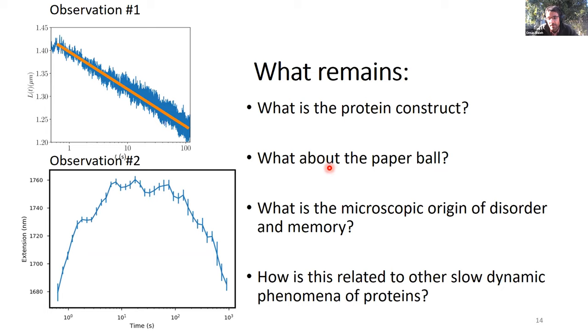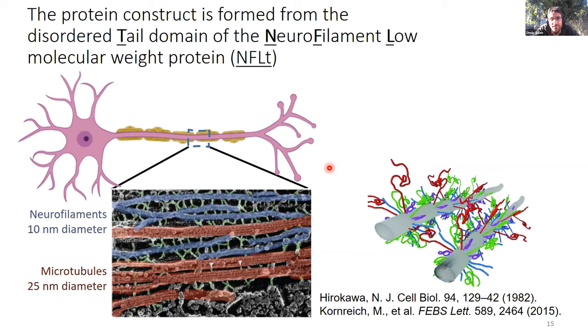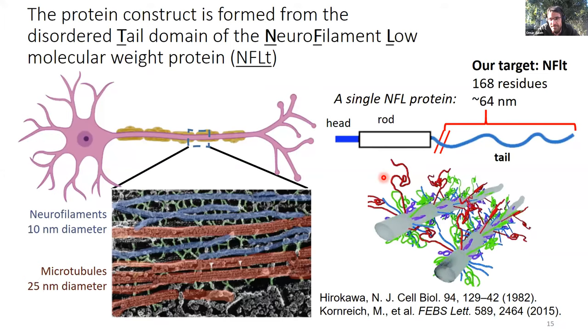So briefly, let's talk about the protein construct. The protein construct is formed from the tail domain of so-called neurofilament low molecular weight proteins. So neurofilaments are a kind of intermediate filament that forms the cytoskeleton and axons, particularly the blue things here, where the red ones are microtubules. The meshwork of this neurofilament, the size of the meshwork of the neurofilament network is set actually by these disordered spacers between rigid rod domains. And those disordered spacers are indeed our target. So a single protein contains a rod-like domain that self-assembles into the stiff filament, but then these brush-like projection domains. And the focus for us today is the tail domain of this NFL protein, and I'll call it NFLT. So we in fact cut it off and measure the 168 residue chain, about a 64 nanometer contour length.